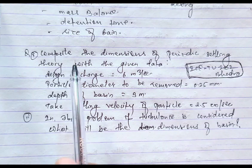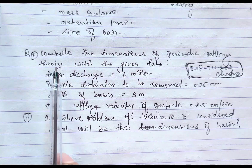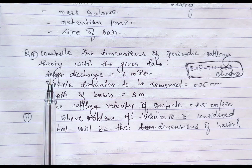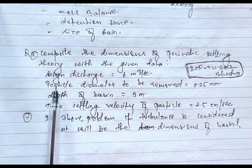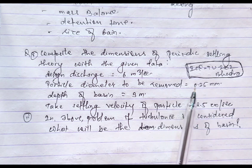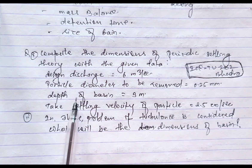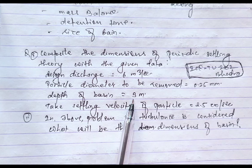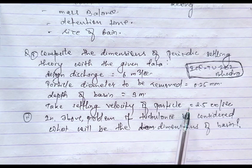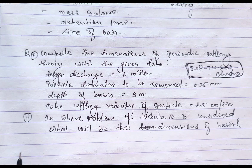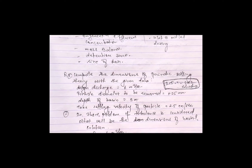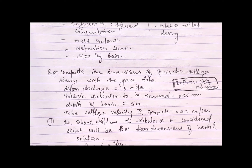The given question is: compute the dimensions of the settling basin using particle settling theory with the given data — design discharge Q = 6 m³/s, particle diameter to be removed d = 0.25 mm, depth of basin D = 3 m, settling velocity of particles w = 2.5 cm/s. Also, if turbulence is considered, what will be the dimensions of the basin? Let's start solving.